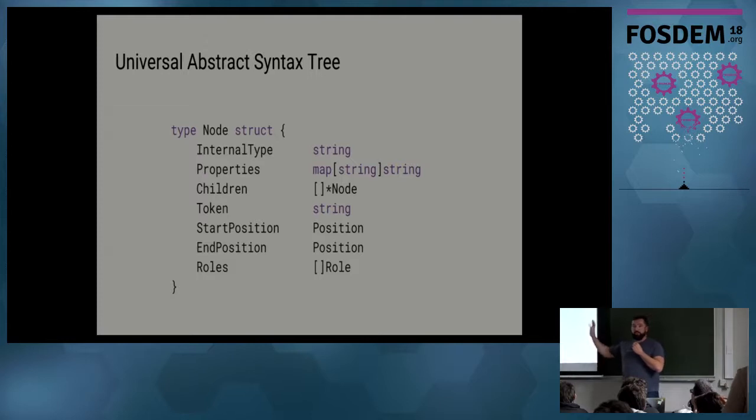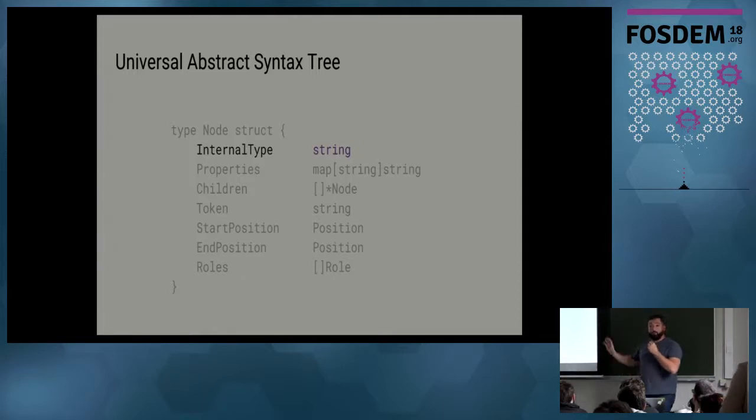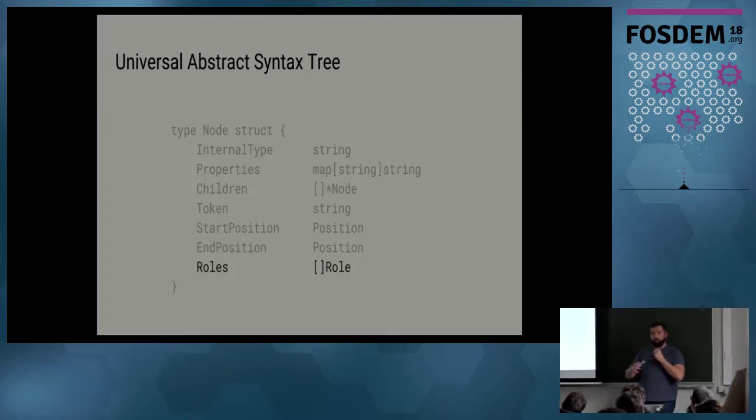So what is the abstract syntax tree? It is simply an abstract syntax tree in a specific format that we designed. Every node has a bunch of different fields. The first one is an internal type - the kind of node in the language. Every single language has a different way of using it. For instance, in Go you may have coroutine, but in Java you may have a class or something. Every single one of these is language-specific. Then you have properties - you can have as many as you want. Then you have children, because it's a tree. The token is the actual text that we have. So for instance, if you have a for loop, it will be 'for' right there. And then the positions, and then the roles.